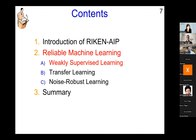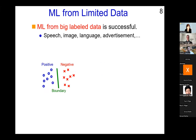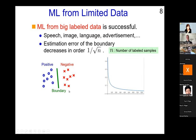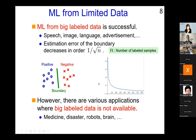Let's start with weakly supervised learning. Machine learning from big labeled data is successful in speech recognition, image understanding, language translation, and advertisement. In the simplest binary classification setting, we are given positive and negative data and want to find a boundary. Estimation error decreases at order 1 over square root of n, where n is the number of labeled samples — meaning four times more data halves the error. But in reality, many applications like medical research, natural disasters, robot control, and brain signal analysis make big data collection quite difficult.